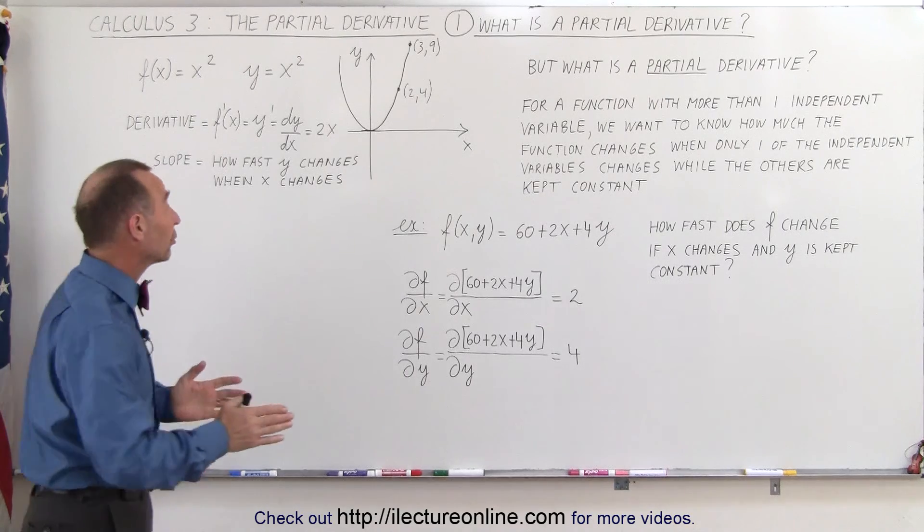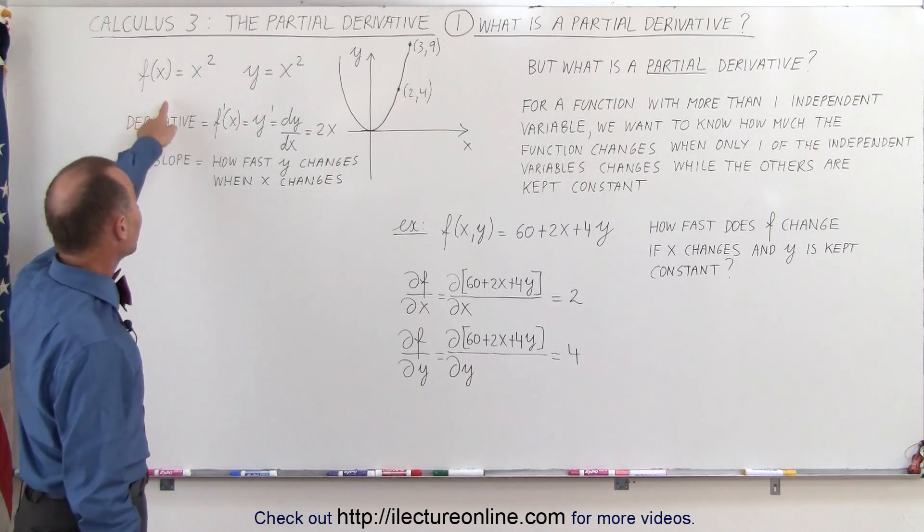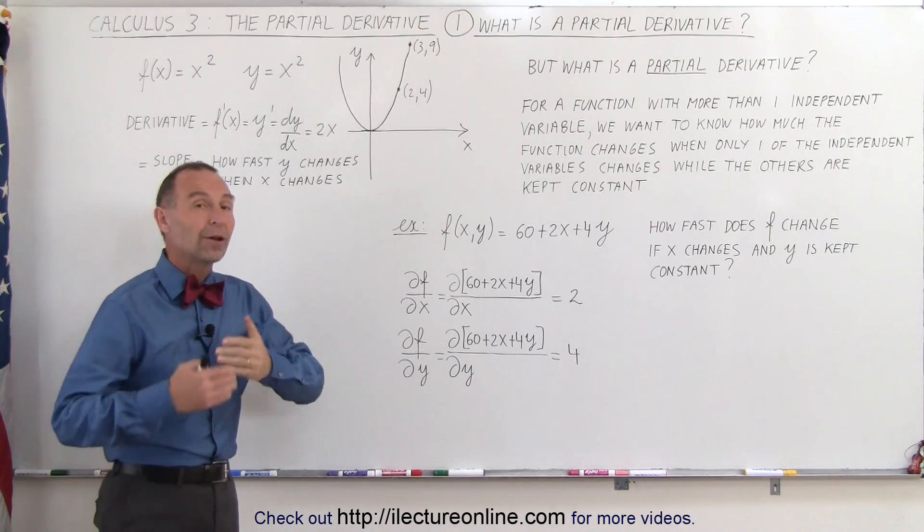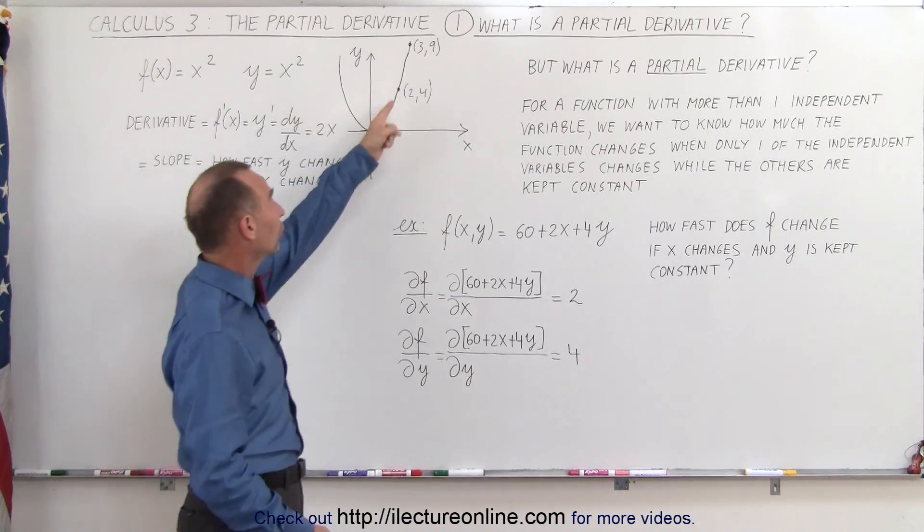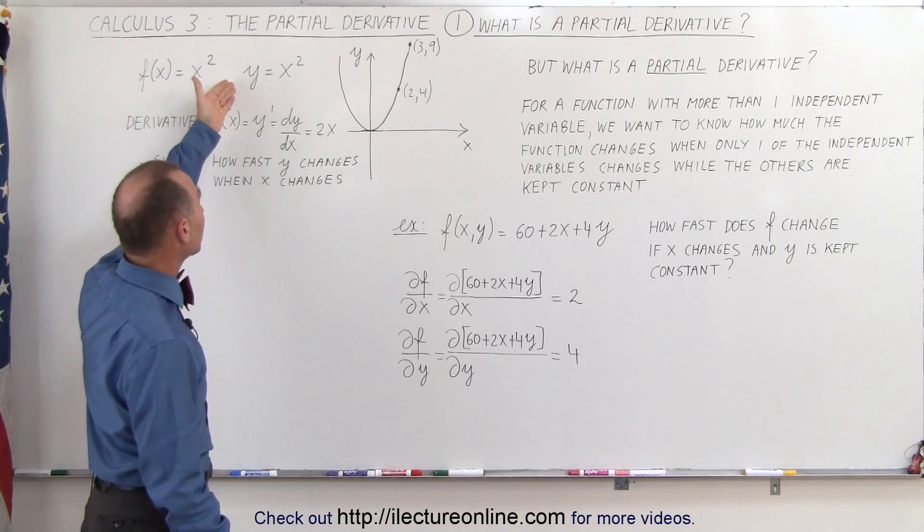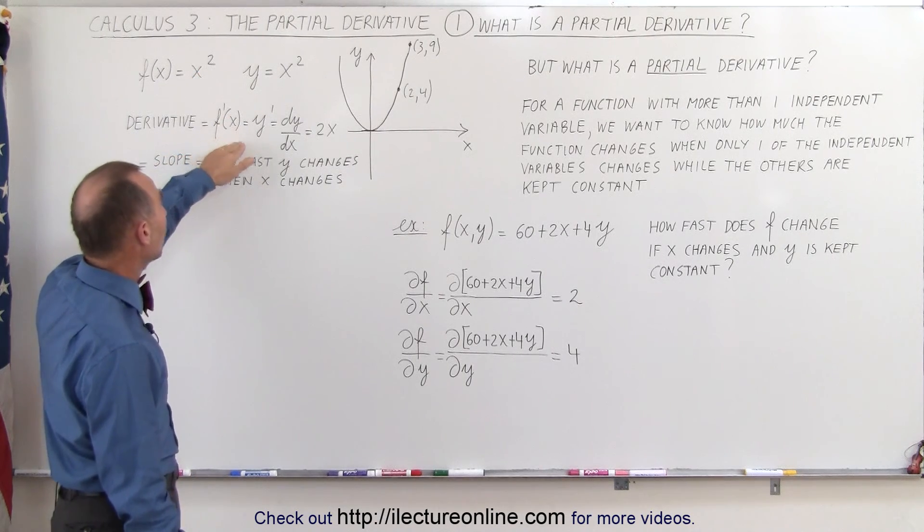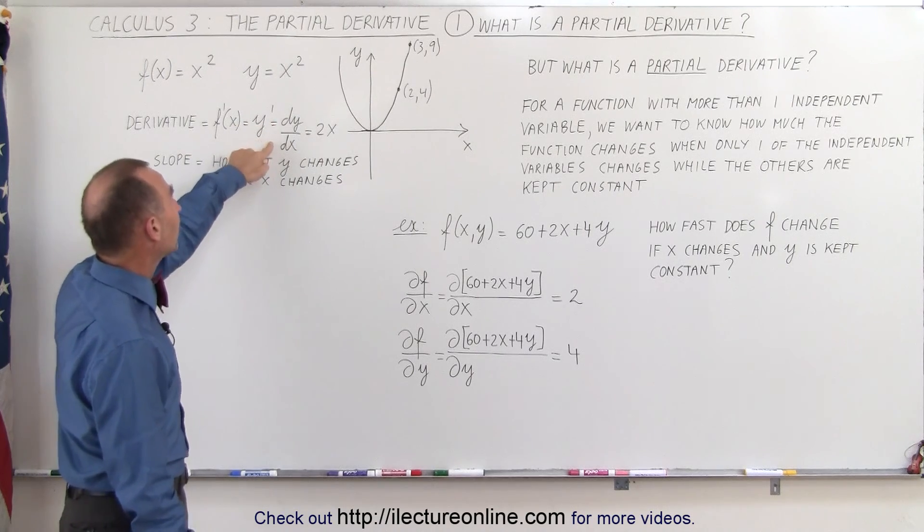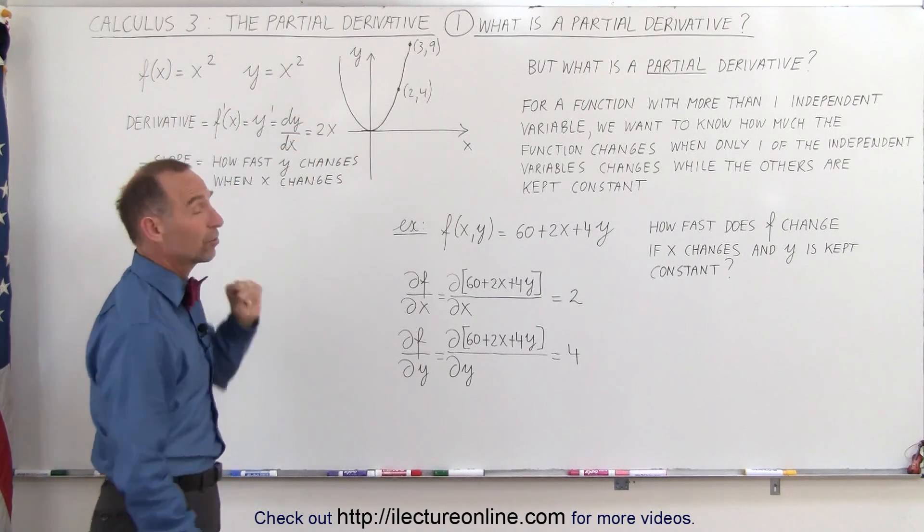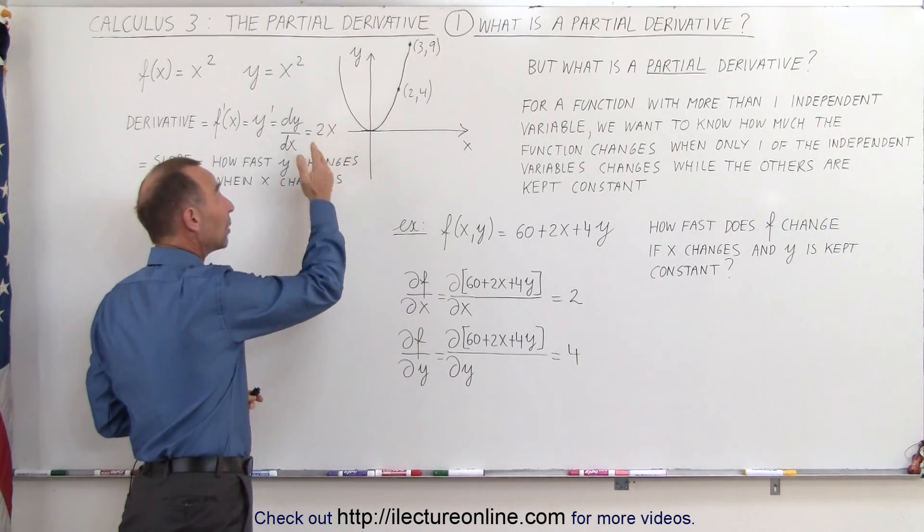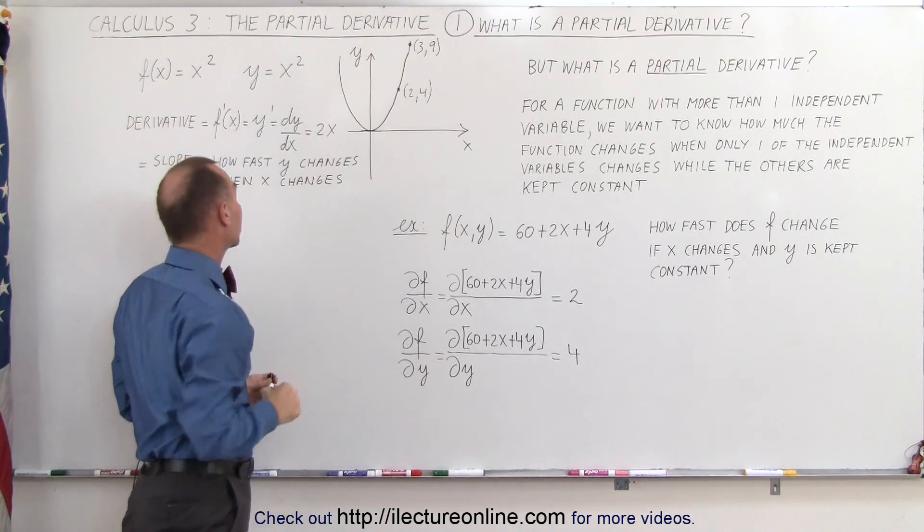In order to do that, let's compare it to a simple derivative. Here we have a function f(x) = x², which is a simple parabola. If you want to find the slope anywhere along this curve, we simply take the derivative of this function. The derivative is written as f'(x), or y', or dy/dx. When we take the derivative of x², we get 2x. In other words, all we have to do is plug in the value for x and we will get the slope anywhere along that curve.